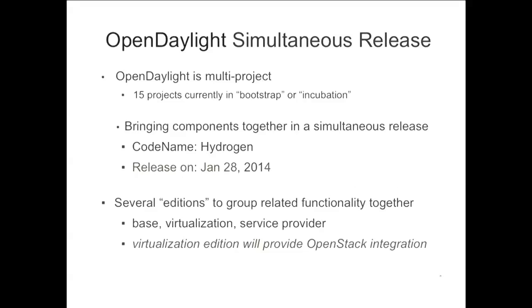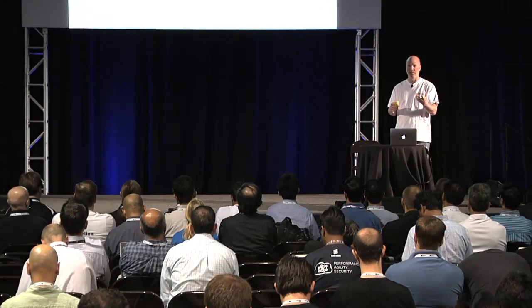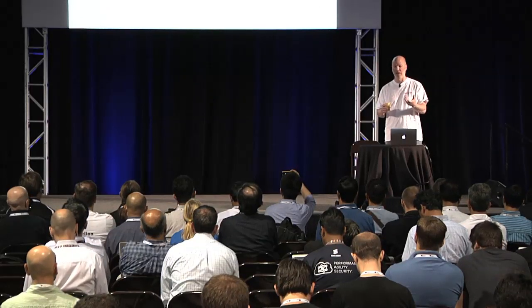We worked for about a year and then recently created a simultaneous release. The idea behind the simultaneous release is that all projects wanting to be bundled together had a timetable, and they were put together in a couple of different release vehicles — we called that Hydrogen. It was supposed to be released on January 28th. The editions, or release vehicles, were Base, Virtualization, and Service Provider. The idea was a base edition with basic functionality, then Virtualization for data center use cases, and likewise for service providers.